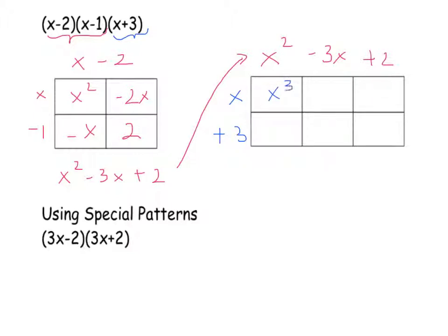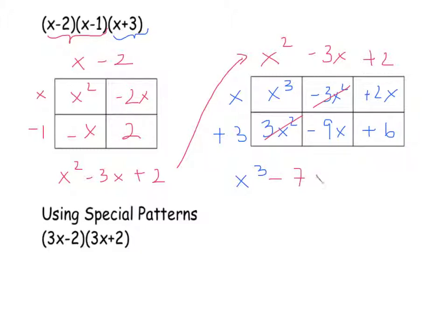Our last binomial is x plus 3, which goes on the side. So I get x cubed minus 3x squared plus 2x from multiplying by x, and 3x squared minus 9x plus 6 from multiplying by 3. The final answer is x cubed — the x squared terms cancel — minus 7x plus 6.